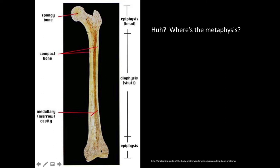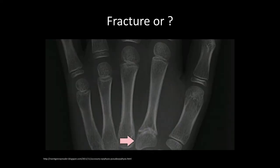The metaphysis is basically below the growth plate. Once it fuses, this whole area up to where it becomes a constant diameter is the metaphysis, and then the diaphysis. This region here would be the diametaphysis — a junctional region, or metadiaphysis if you want to switch the words around.